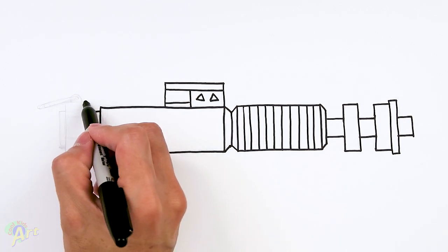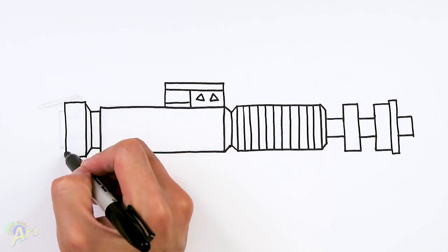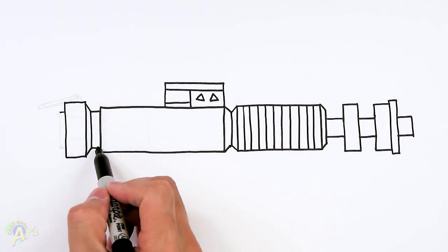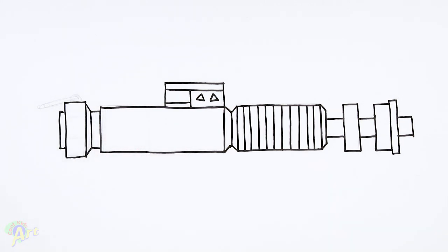Close it off and then one more big rectangle. And then just a little bit more detail. Take this line, just come over, extend it. Close it off and that's pretty much it.